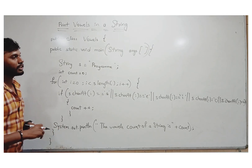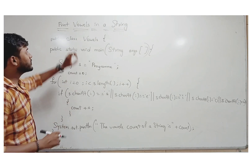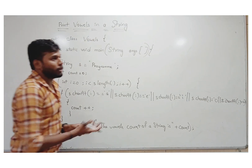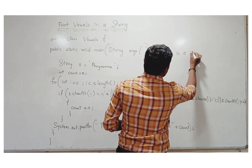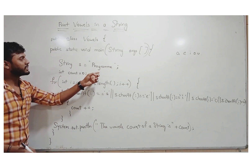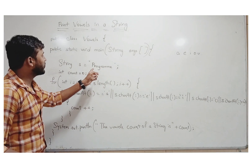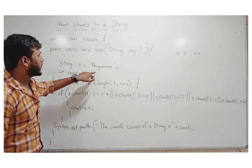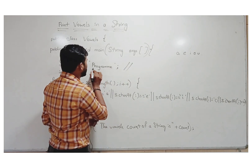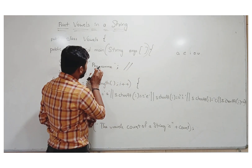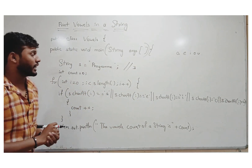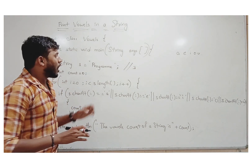Hi guys, here is another interview question. The question is: how to print the vowels in a string. As we all know, vowels are five: a, e, i, o, u. The given string is 'program'. We need to calculate how many vowels are there. Manually, we can count: one, two, three — there are three vowels in 'program'.